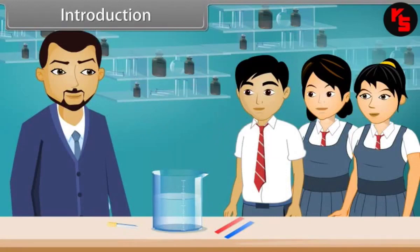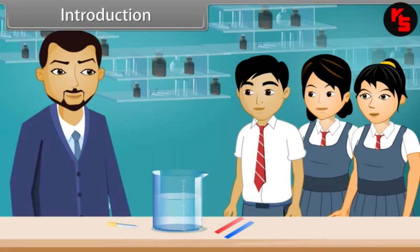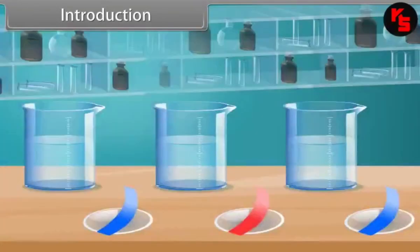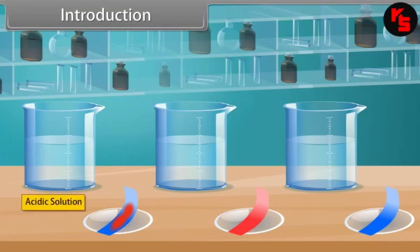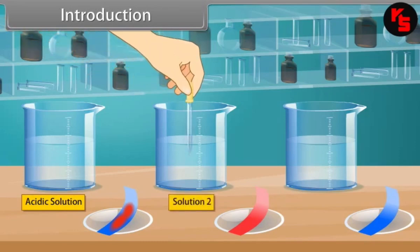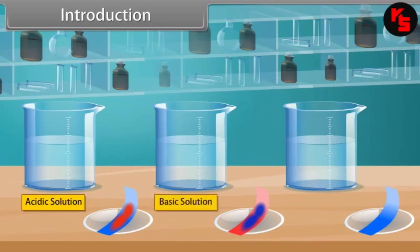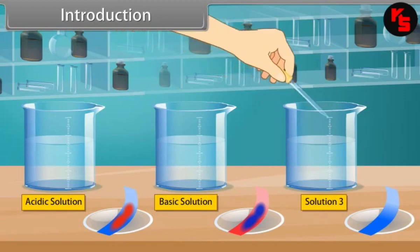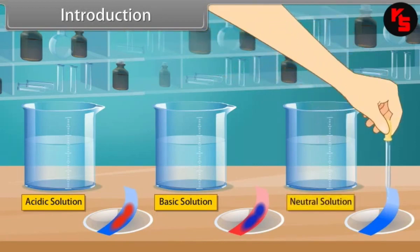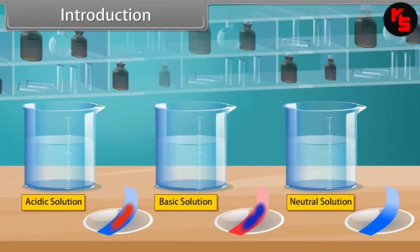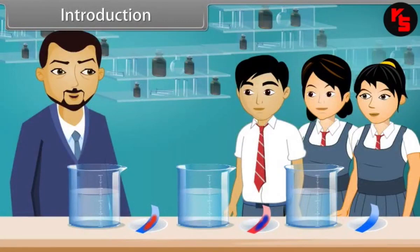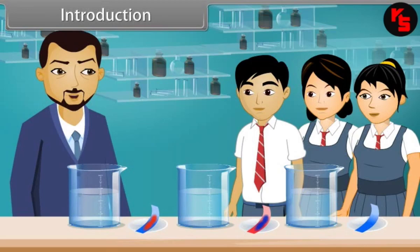Introduction — Lab Demonstration. A student and teacher perform an experiment to identify acidic, basic, or neutral solutions. A drop of solution 1 on blue litmus paper turns red — showing acidic behavior. A drop of solution 2 on red litmus paper turns blue — showing basic behavior. Solution 3 shows no color change, indicating it is neutral. The teacher explains that equilibrium is a condition when the number of moles of base becomes equal to the number of moles of acid. In this lesson, students will study physical and chemical equilibrium.